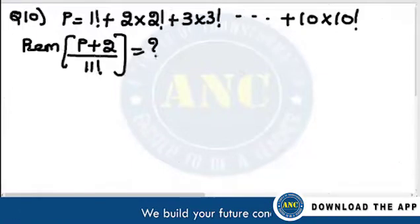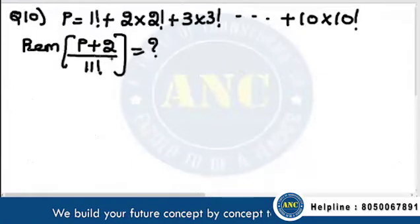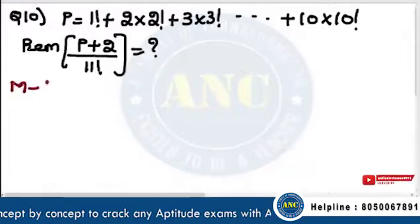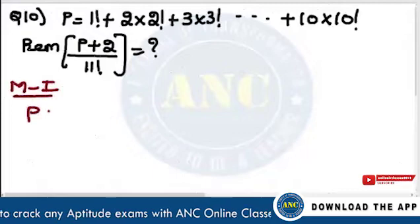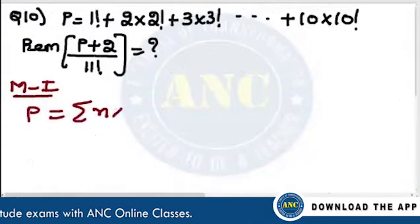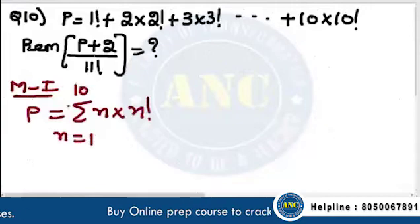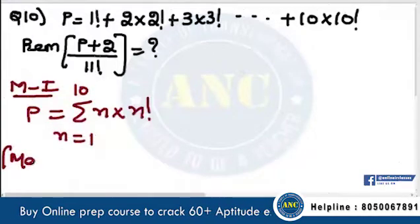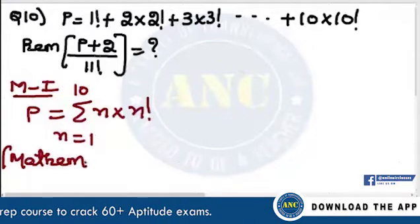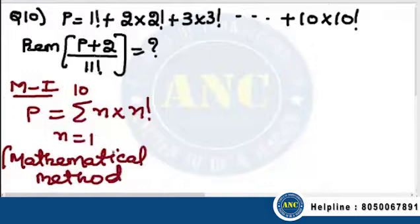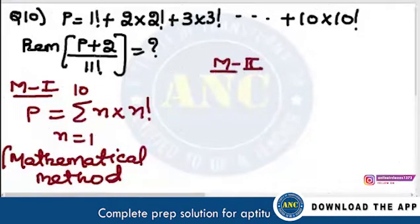P plus 2 is divided by 11 factorial. I have seen many students solving this using Method 1 — P is summation of n into n factorial for n equal to 1 to 10. This is a mathematical method. I am not here to teach you mathematics; I am here to maximize your score. Please avoid this method.